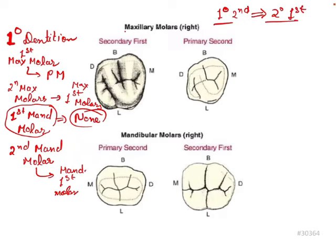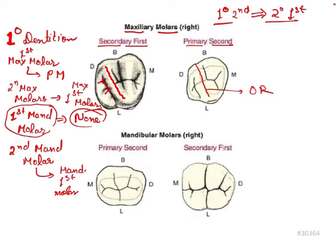Looking at the maxillary molars, we can appreciate that the primary second maxillary molar has an oblique ridge, clearly visible here. That is why it resembles the permanent first maxillary molar. On the permanent first maxillary molar you can see the oblique ridge, a distal fossa, a mesial fossa, and a transverse ridge — all of which are similarly appreciated on the primary second maxillary molar.